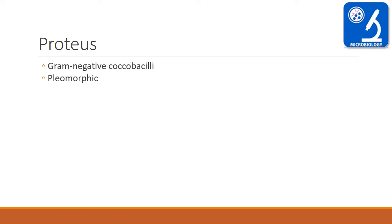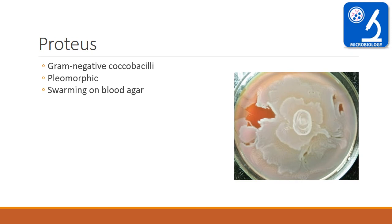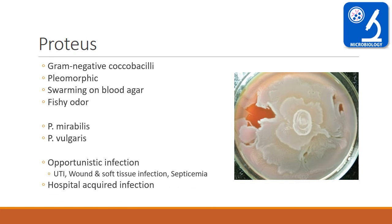Next, Proteus. Proteus is named after the Greek god Proteus who was able to assume any shape, so it is a pleomorphic type of bacteria. It is a gram-negative coccobacillus that shows swarming growth on blood agar and can give a fishy odour. There are two medically important species: Proteus mirabilis and Proteus vulgaris. Proteus is an opportunistic pathogen commonly associated with urinary tract infection, wound and soft tissue infections, septicemia, and hospital-acquired infection.